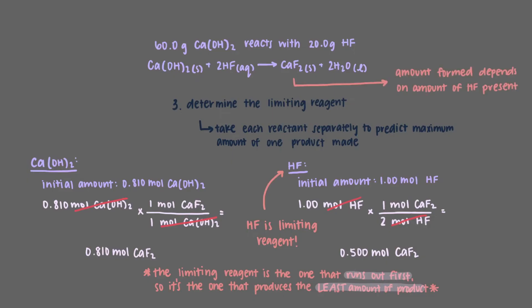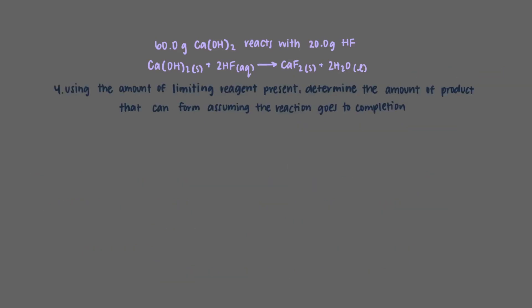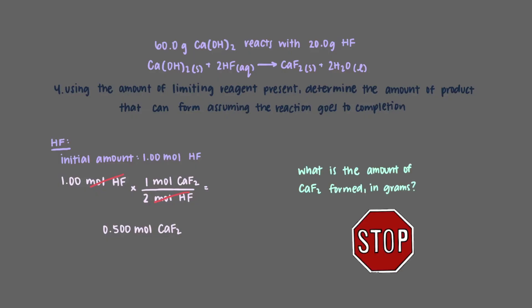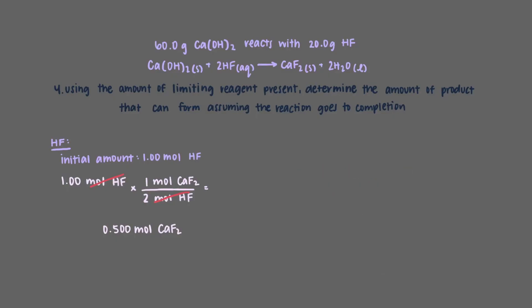The amount of calcium fluoride formed in this reaction depends on the amount of hydrogen fluoride present. Because it's the limiting reagent, we only consider the amount of hydrogen fluoride when calculating the amount of calcium fluoride formed. We already calculated that 0.500 moles of calcium fluoride form from 1 mole of hydrogen fluoride. When we multiply by the molar mass of calcium fluoride — 78.0748 grams per mole — we get that 39.0 grams of calcium fluoride are formed.